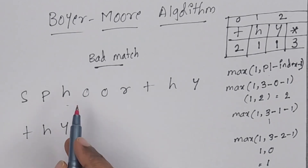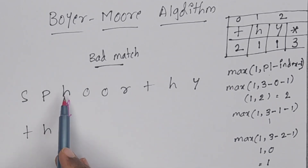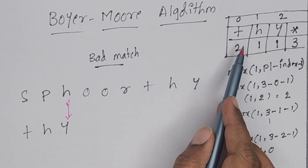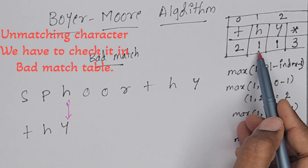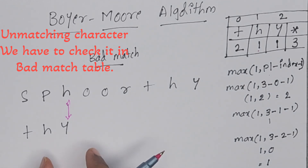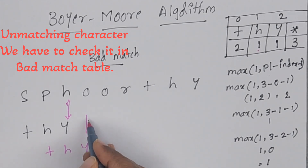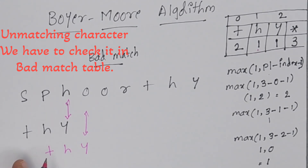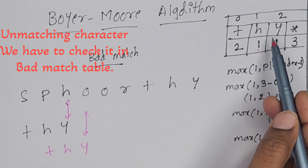The rightmost characters are H and Y. H and Y are not matching. Now we check: is H present in the bad match table? Yes, H is present. What is H's value? It is 1. So the complete pattern will shift 1 character to the right. Again, we compare the last characters right to left. O and Y — are they matching? No. Is O present in the table? No, it is not present.